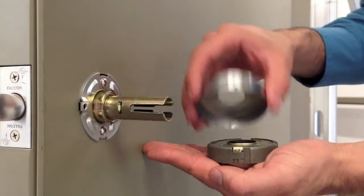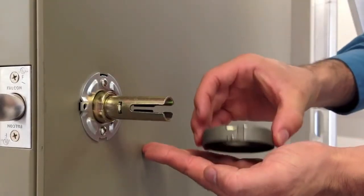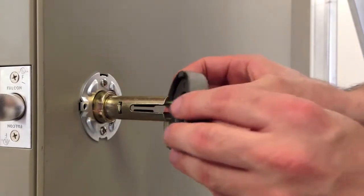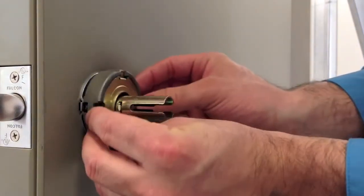Separate the inside rose from the spring cage. Slide the spring cage over the chassis, aligning the tab with the elongated notch. Secure with the two screws.